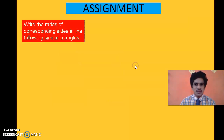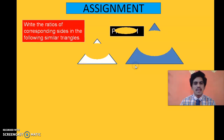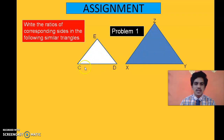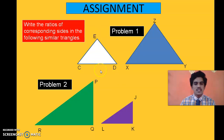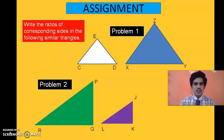I will be giving an assignment with two problems, each involving two similar triangles. First: triangle CDE and triangle XYZ are similar — write which ratios of corresponding sides are equal. Second: triangle PQR and triangle JKL — write the ratio of corresponding sides. This concept of ratio of corresponding sides is very important for us to derive the section formula, which we will discuss in the next part. Thank you.